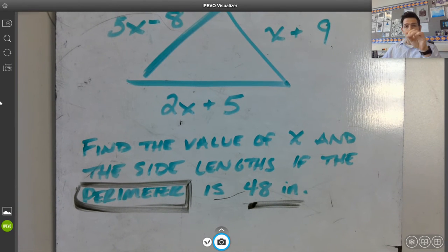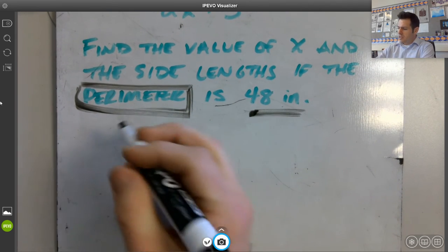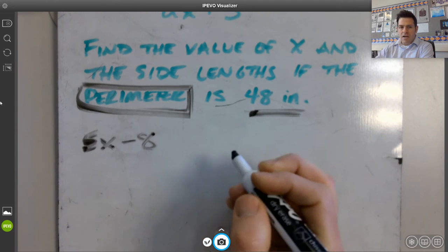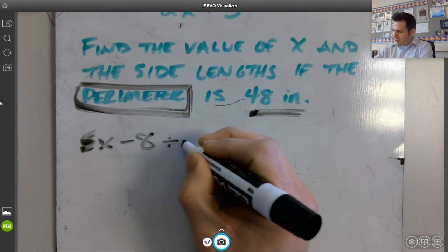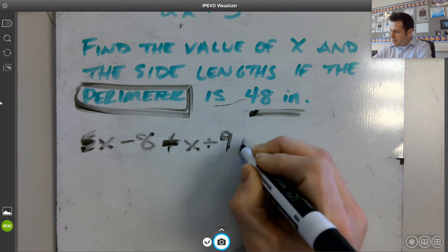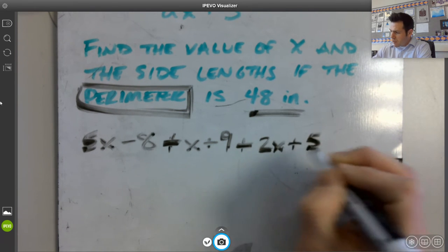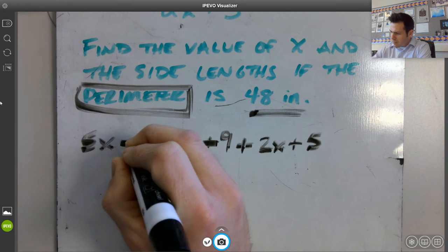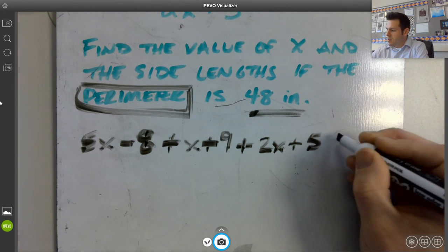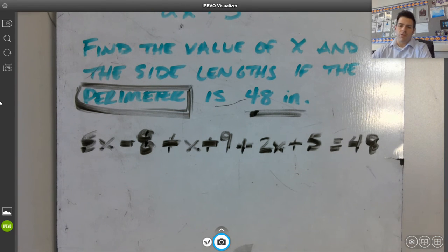So, I need to take those three expressions and add them all together. I'm going to do that right underneath here. So, I have a 5x minus 8. I have a x plus 9. And I have a 2x plus 5. And again, because it's perimeter, I'm adding all of those things together. The 5x minus 8, the x plus 9, the 2x plus 5. And they should all, when we combine them all together, should be equal to 48.